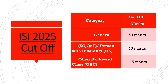ISI 2025 Cut-Off: For the general merit category, the cut-off is 50 marks. For SC, ST, or persons with disability, the cut-off is 40 marks. For Other Backward Classes (OBC), the cut-off is 45 marks.